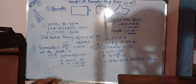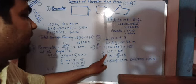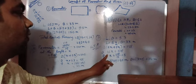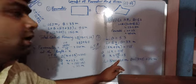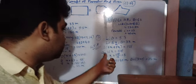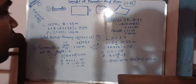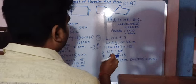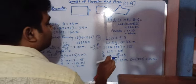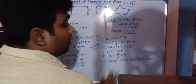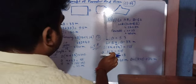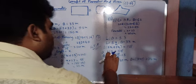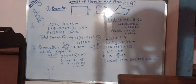To clarify: 16 multiplied by x equals 128. To find the value of x, divide 128 by 16, since 16 is multiplied with x. That gives x = 8.